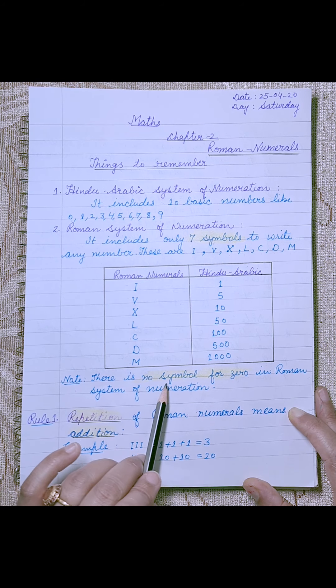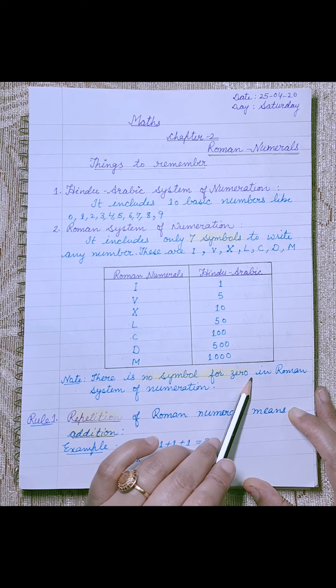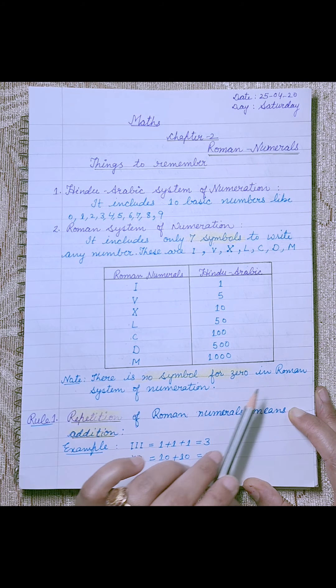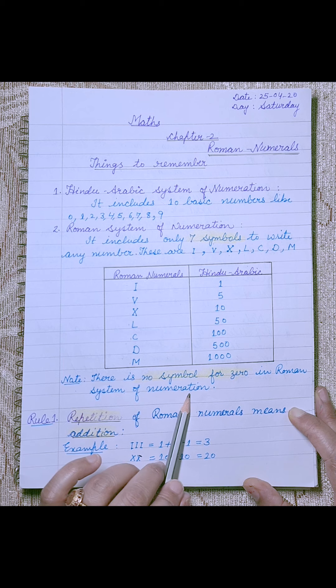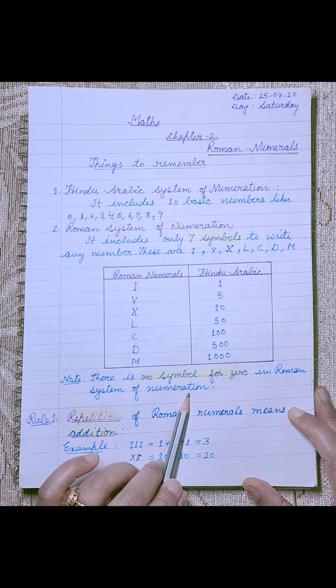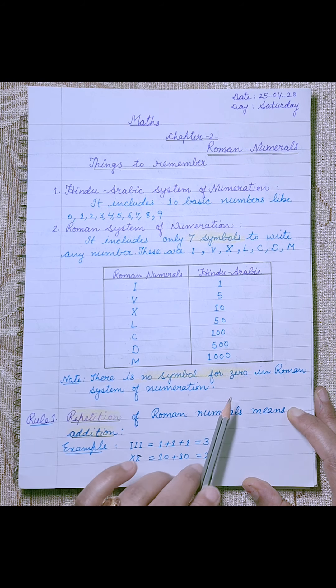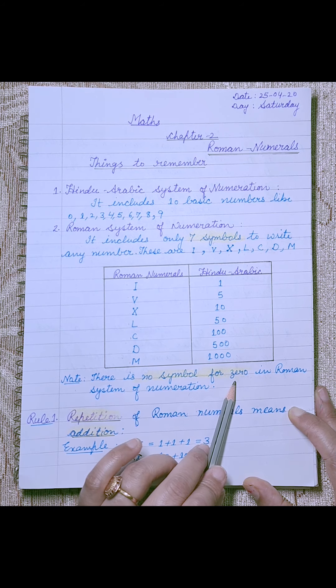Note: There is no symbol for zero in the Roman system of numeration.